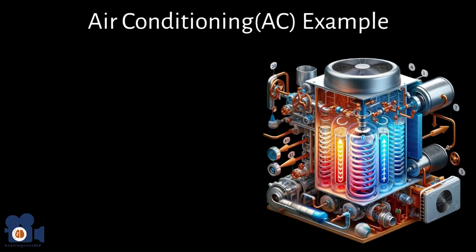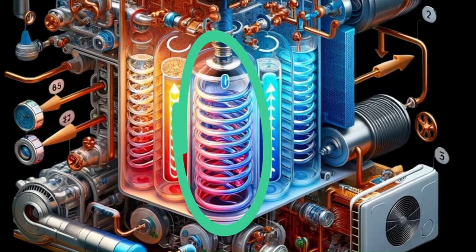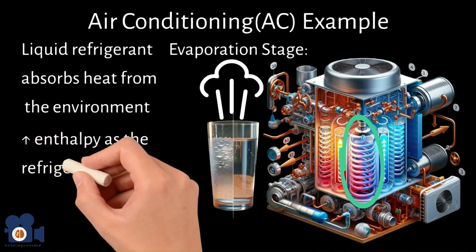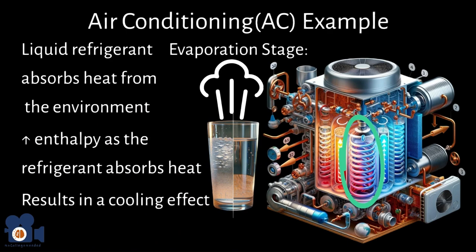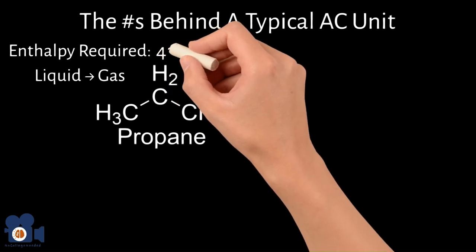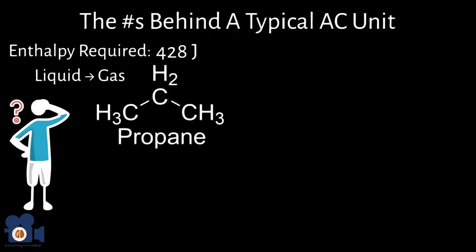Now let's go over the air conditioning example. AC works on vapor compression cycles using a refrigerant that undergoes phase changes to facilitate heat transfer. The key stage where enthalpy plays a cooling role is evaporation — similar to sweating. Inside the evaporator coil, the liquid refrigerant absorbs heat from the environment and turns from liquid to vapor. This involves a significant increase in enthalpy, resulting in a cooling effect. For a typical AC unit, the enthalpy required to change propane from liquid to gas at its boiling point of −42.1°C (−43.8°F) is about 428 joules.